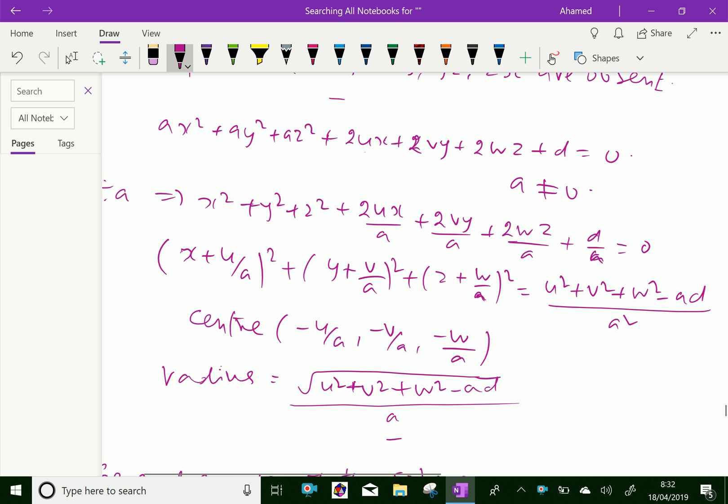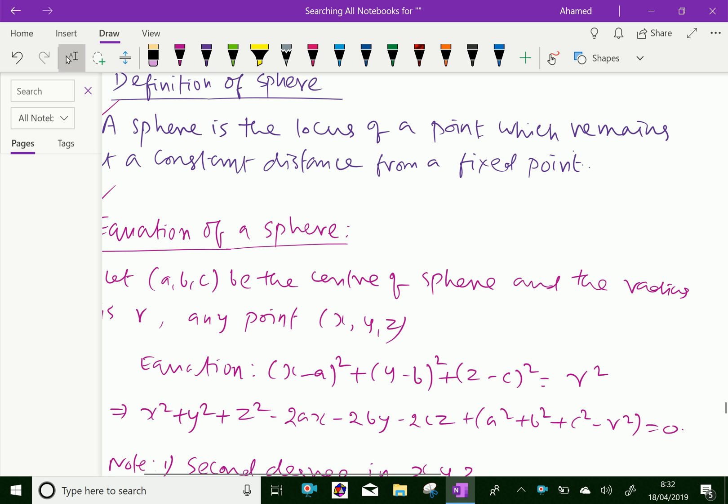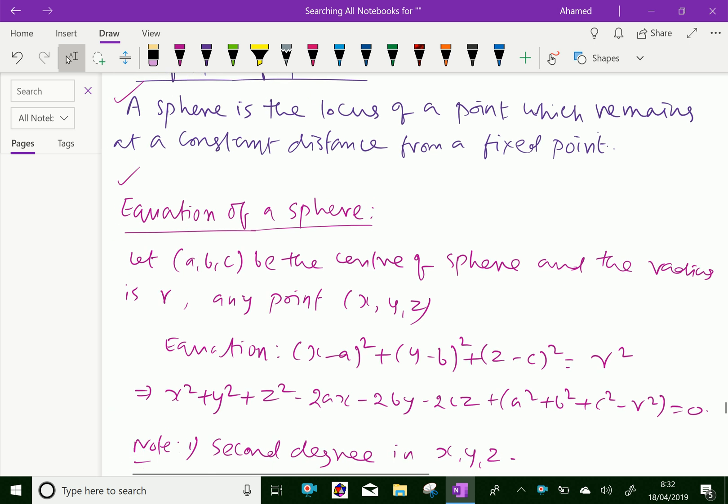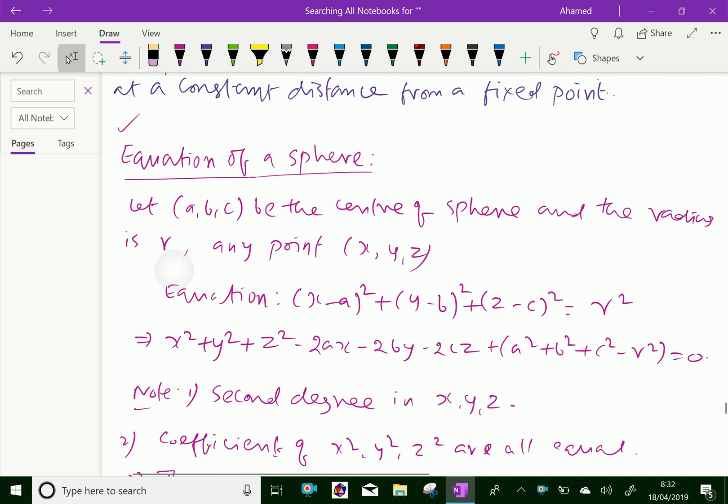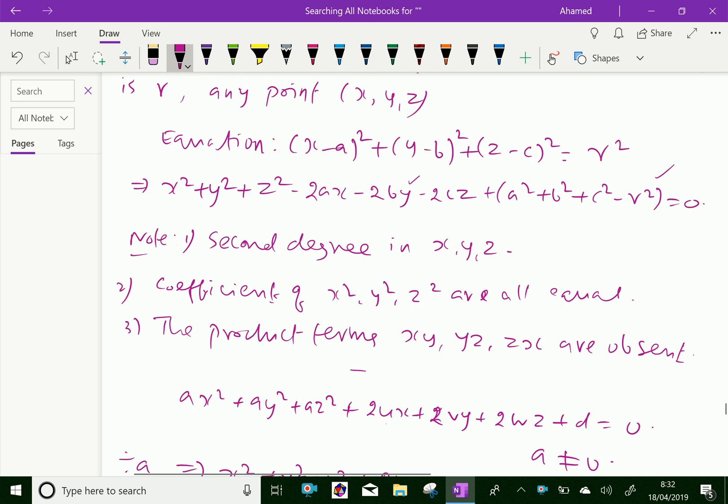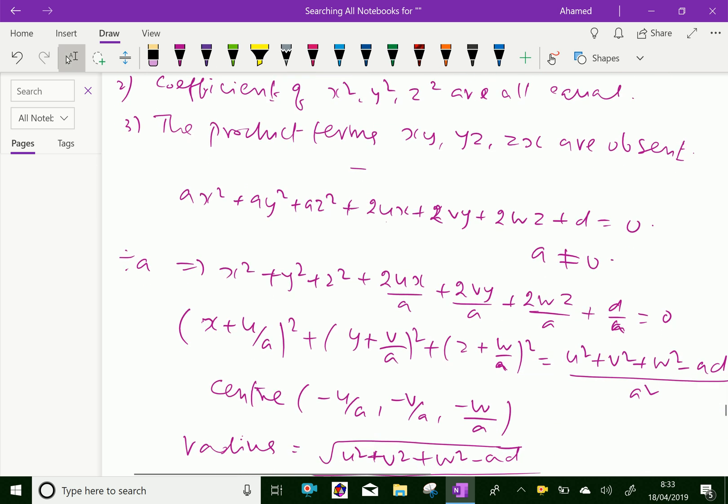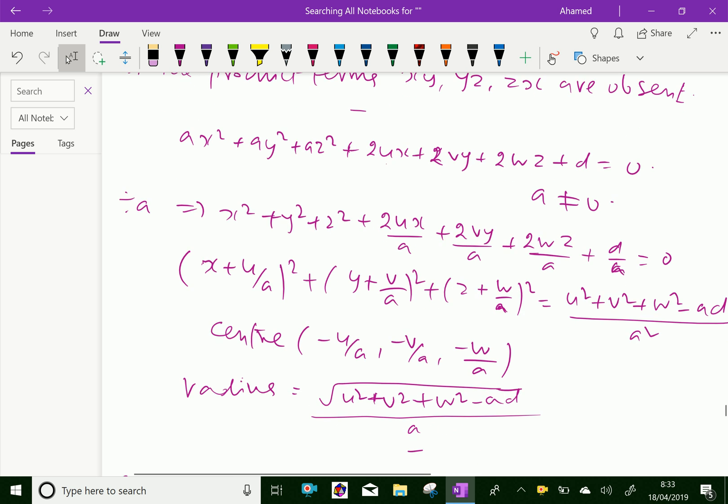So, we got the equation in two forms. First form is x square plus y square plus z square minus 2 a x minus 2 b y minus 2 c z plus a square plus b square plus c square minus r square, and as well, in terms of multiplication of a throughout, we get another form of the equation and its center and radius.